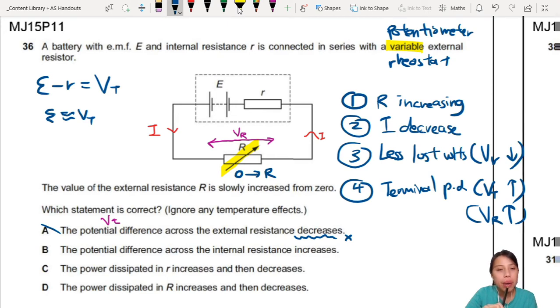B says PD across your internal resistance increases. So internal resistance will be this one, VR. That's the PD across internal resistance. So when current decreases, your lost volts should go down, not increase. So this one is wrong. This one should decrease. Wrong trend. So PD is done. The other two choices talk about power. So we now have to think about power.